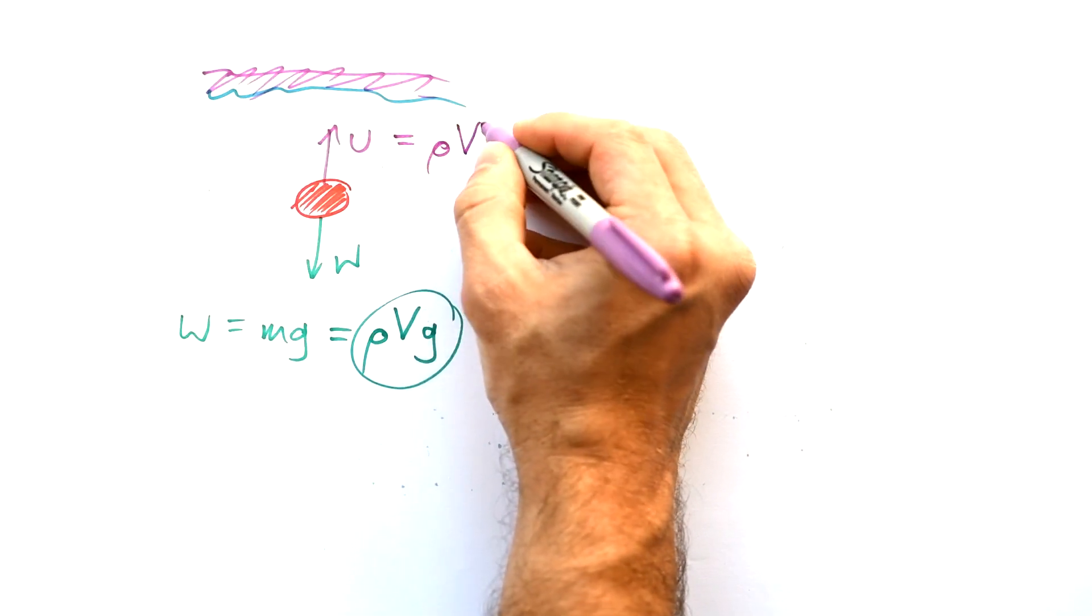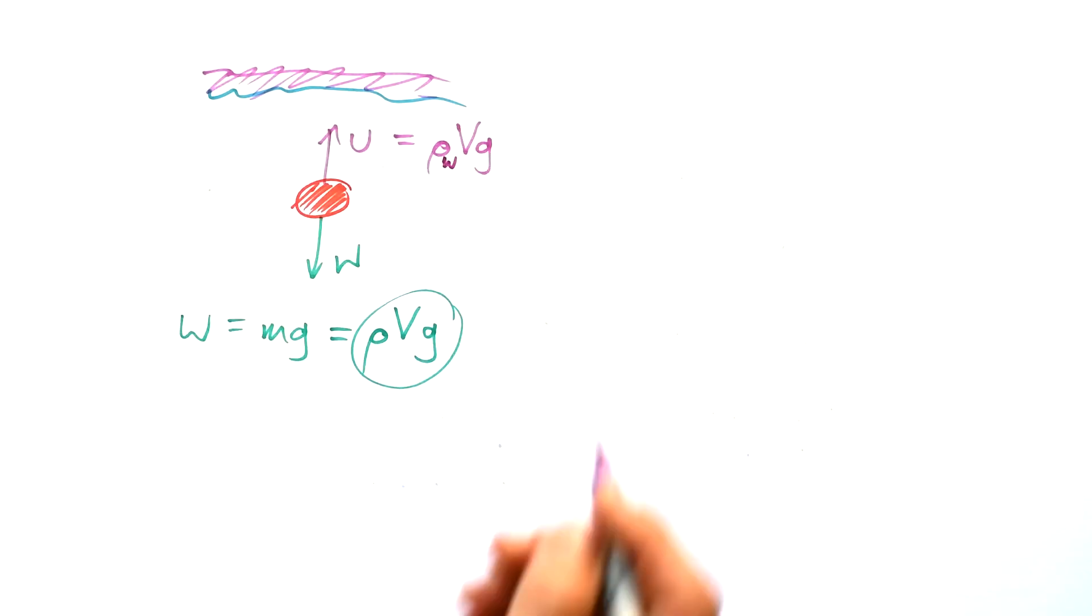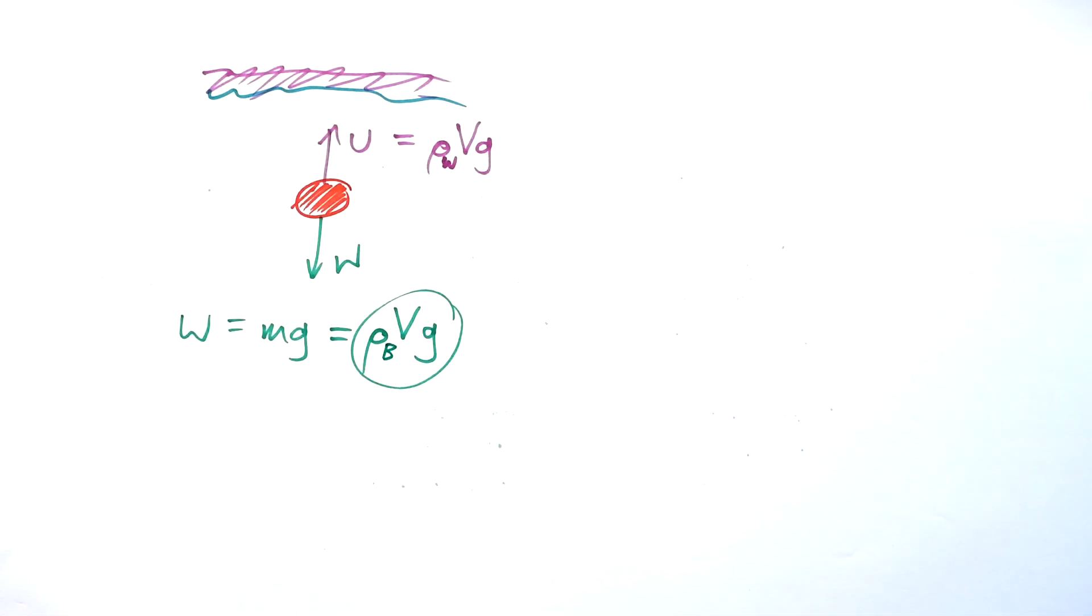But not ρVg of the ball this time. It's ρVg of water. So, ρ_W times V times g. But the volumes are going to be the same, and g is going to be the same because it's a constant. So, I have ρ_W Vg and ρ_B Vg. The weight of the water being displaced and the weight of the ball.